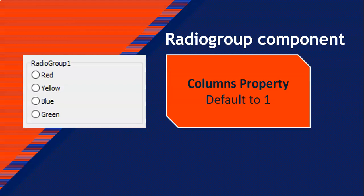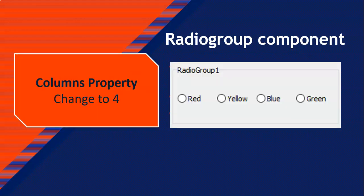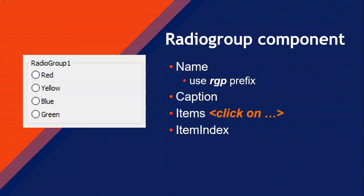You'll notice all the options are one after each other in one column because the columns property of the radio group is set to one. If you wanted the options next to each other horizontally, you'd set columns to four and they'd appear side by side. Setting it to two would give you red and yellow in one column, then blue and green next to that. For now, let's keep columns set to one.